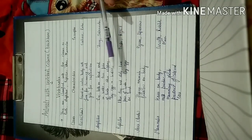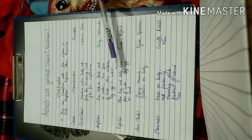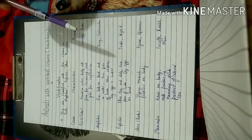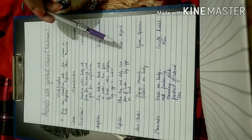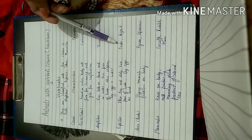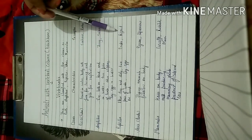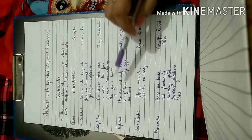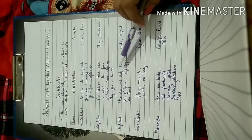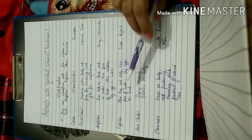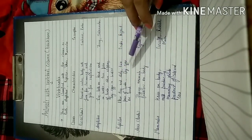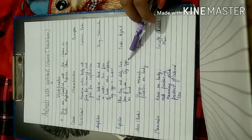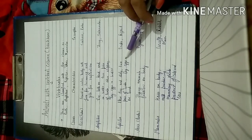Another class is Reptilia. Reptilia includes animals such as snakes and lizards. Their skin is dry and scaly, they have two pairs of limbs, and they lay eggs on land.